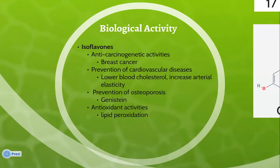Genistein plays an important role in the prevention of osteoporosis, as it is thought to not only prevent bone loss but to potentially restore new bone cells. In vitro studies also demonstrate the antioxidant powers of genistein and daidzein. These isoflavones inhibited the oxidation of DNA in human immune cells and also protected against free radical induced lipid peroxidation.